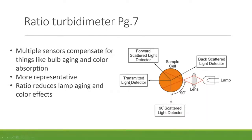The Ratio Turbidometer uses a combination of different orientations and multiple sensors to compensate for lamp aging, color absorption, and similar issues. Because it uses multiple angles, it tends to be more representative. The ratio configuration reduces lamp aging and color effects by averaging out lamp power variations, giving a more reliable measurement.